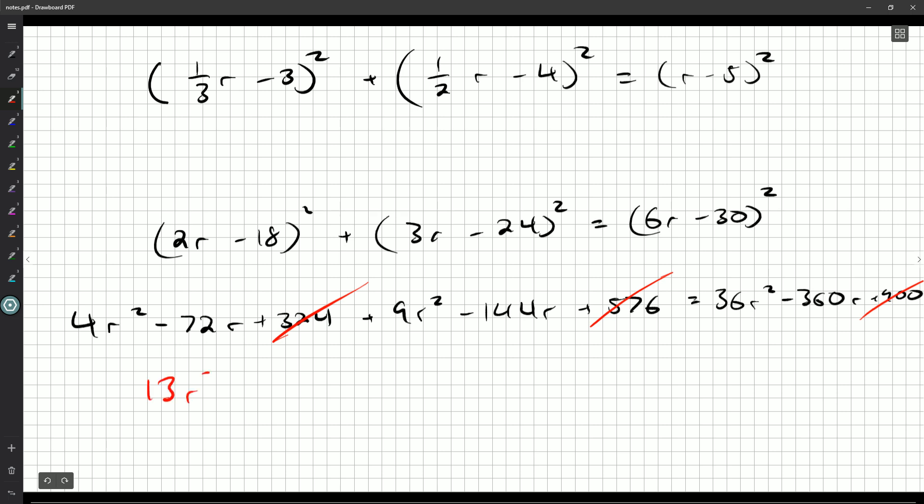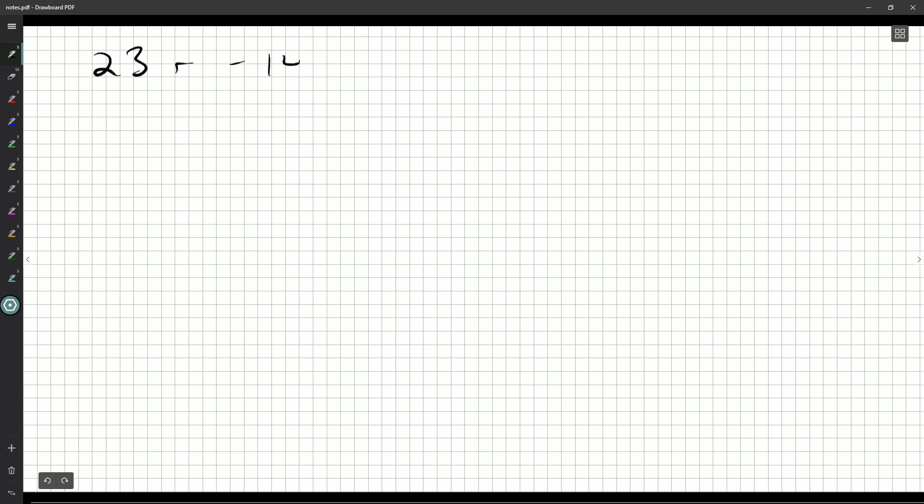So what have I got over here? I got 13R squared minus 216R. And that's equal to 36R squared minus 360R. So let's subtract 13R squared on both sides. So 36 minus 13, that's going to be 23. 23R squared minus 144R. And this factors really nicely. Take out a factor of R. Now, R can't be 0. That would be way too small in terms of a radius. So we conclude 23R minus 144 must be 0. R is 144 over 23.